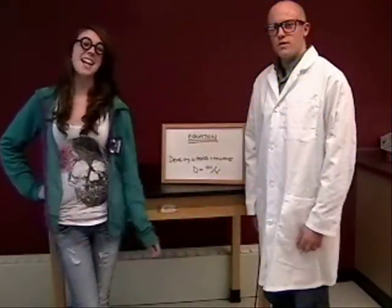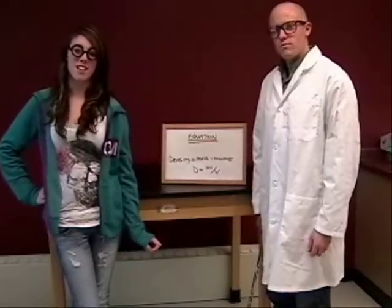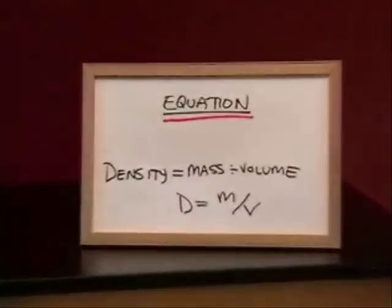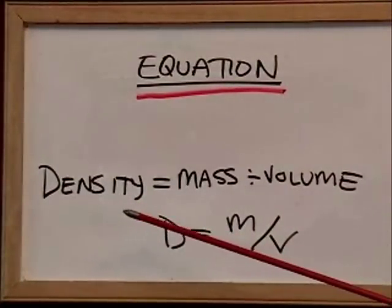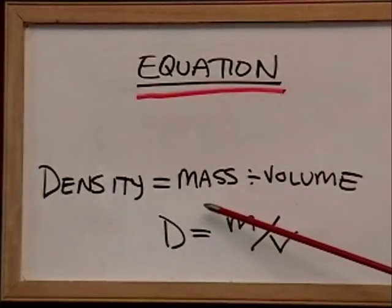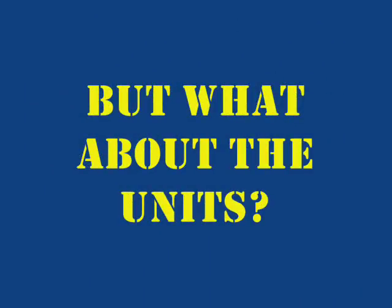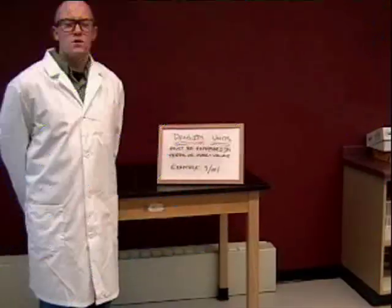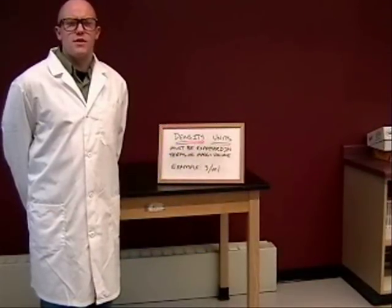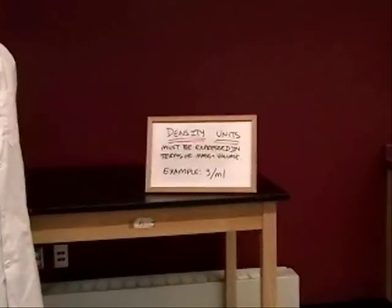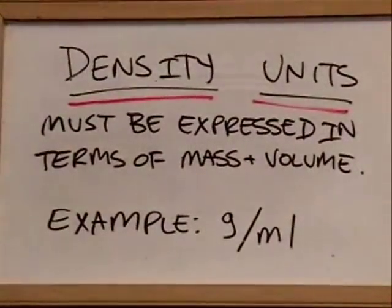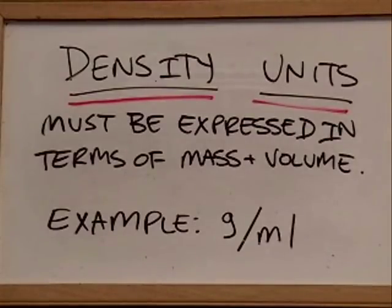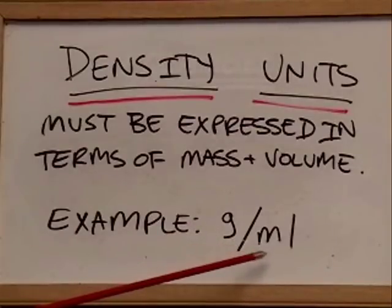Hello there, Professor Foley here again. Professor Noyes, back too. The equation for density is D equals M over V. In other words, the density of an object is equal to the mass of that object divided by its volume. There's an important rule for density units: all density units must be expressed in terms of both a mass unit and a volume unit. An example of a density unit would be grams per milliliter, or mass per unit of volume.